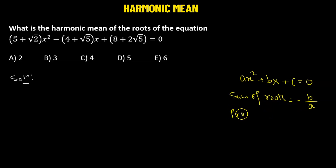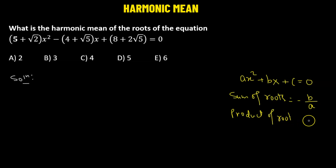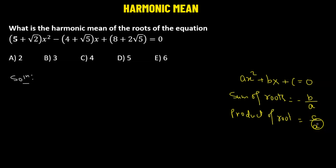We can also find out the product of roots. The product of roots is the constant term — that's c — divided by the coefficient of x². So c over a is going to be the product of the roots.